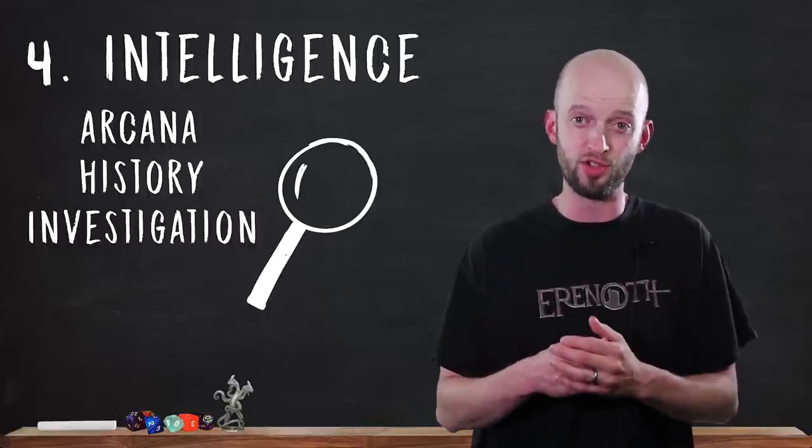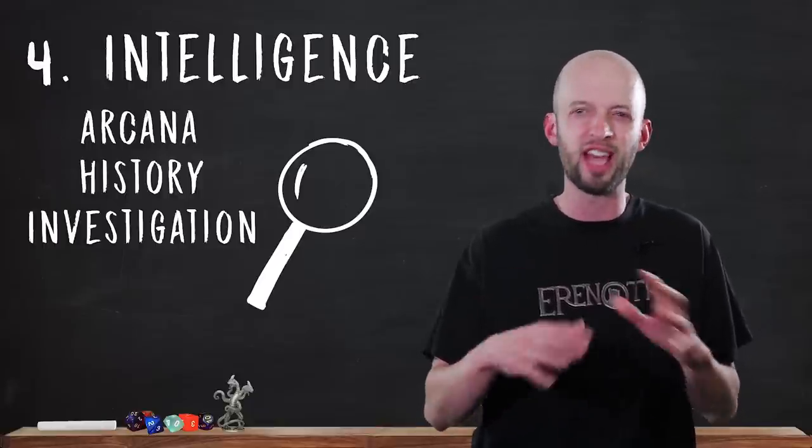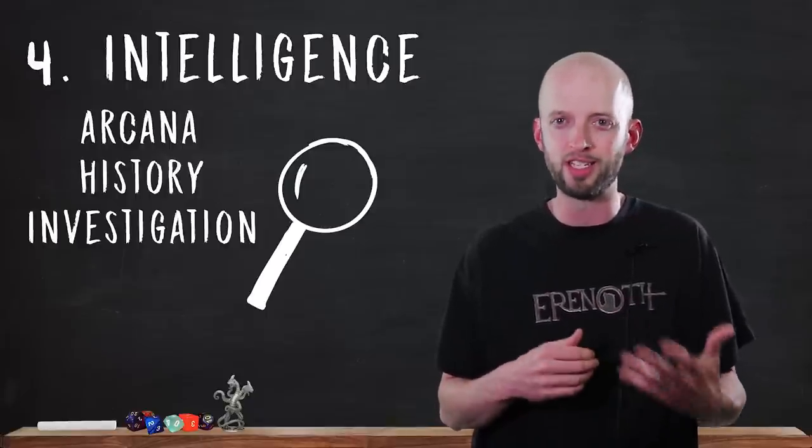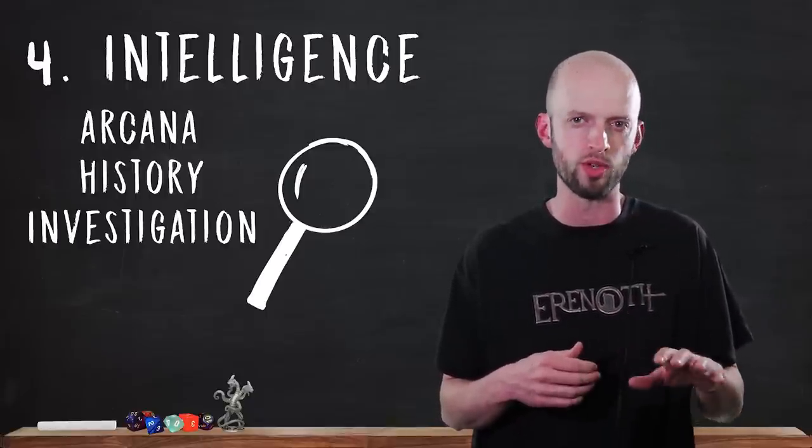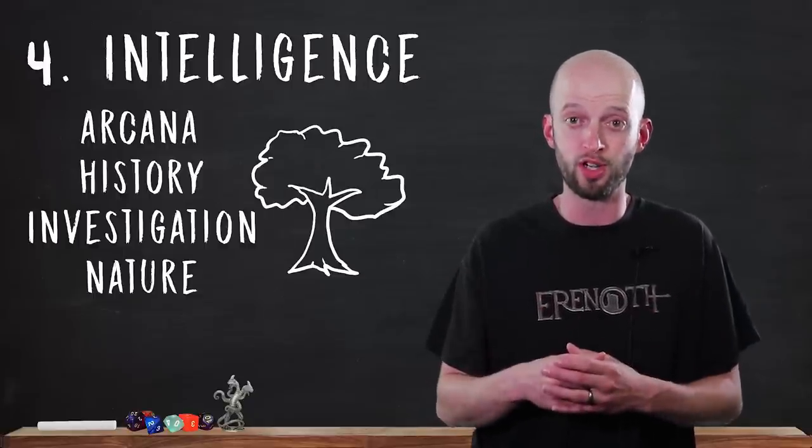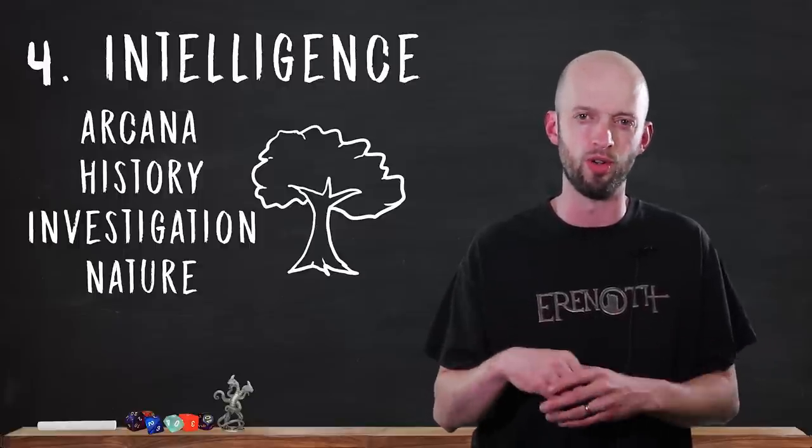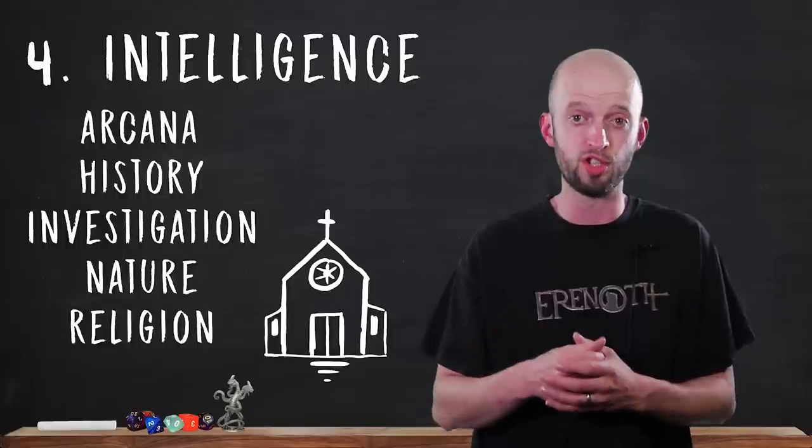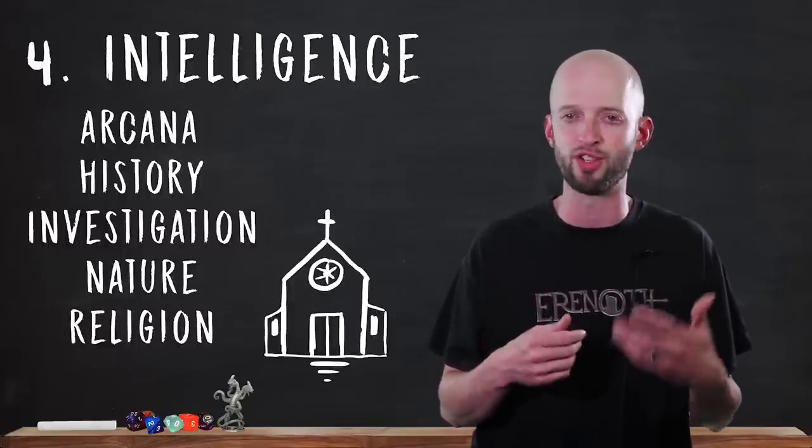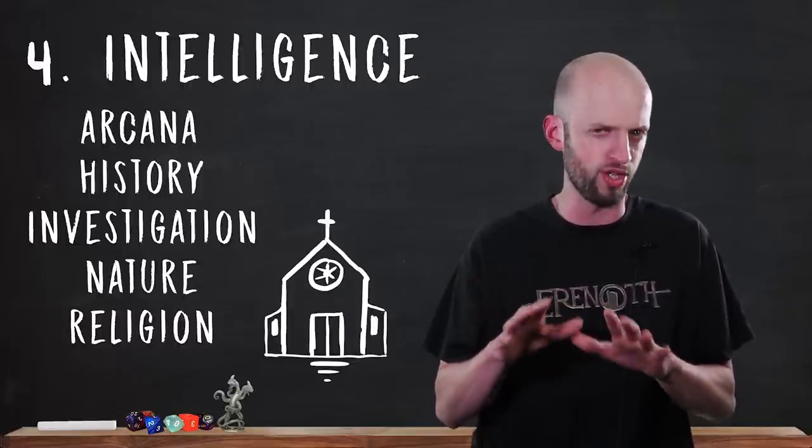Investigation. This skill is used when you want to look around for clues and make deductions. Think of the kind of situations where a detective might come in handy. Maybe you're finding something that's been lost or solving the mystery of what might have caused this wound. Nature. This is used to recall knowledge of plants, terrain, weather, animals, any part of the natural world. Religion. It's used to recall knowledge of deities, holy symbols, religious rites, prayers, and traditions. This could be from established organizations or fringe cults.